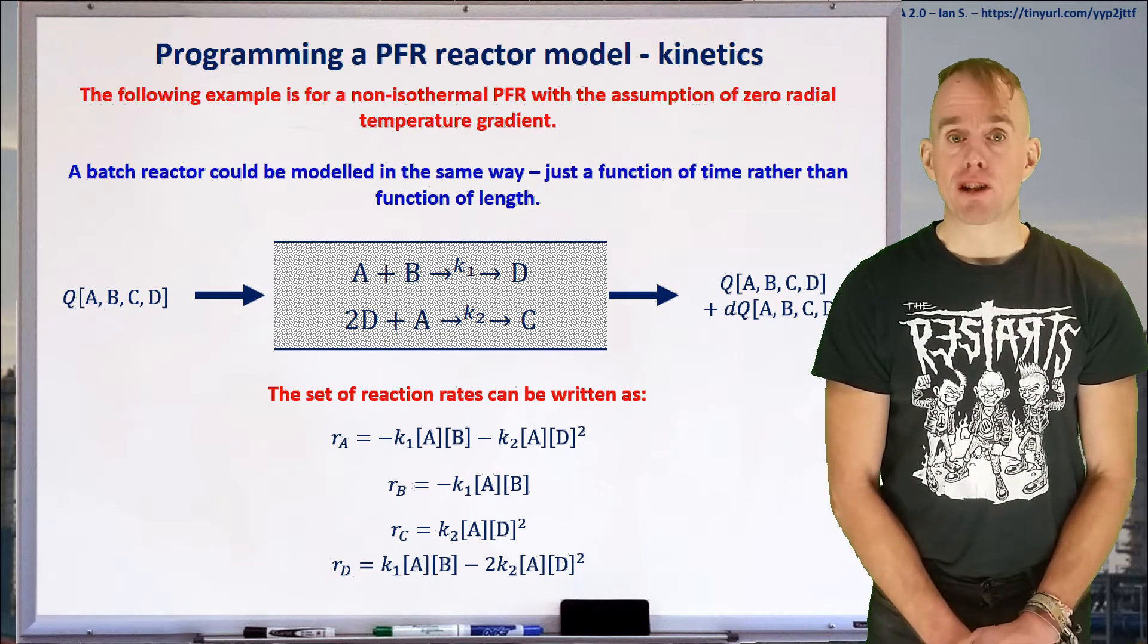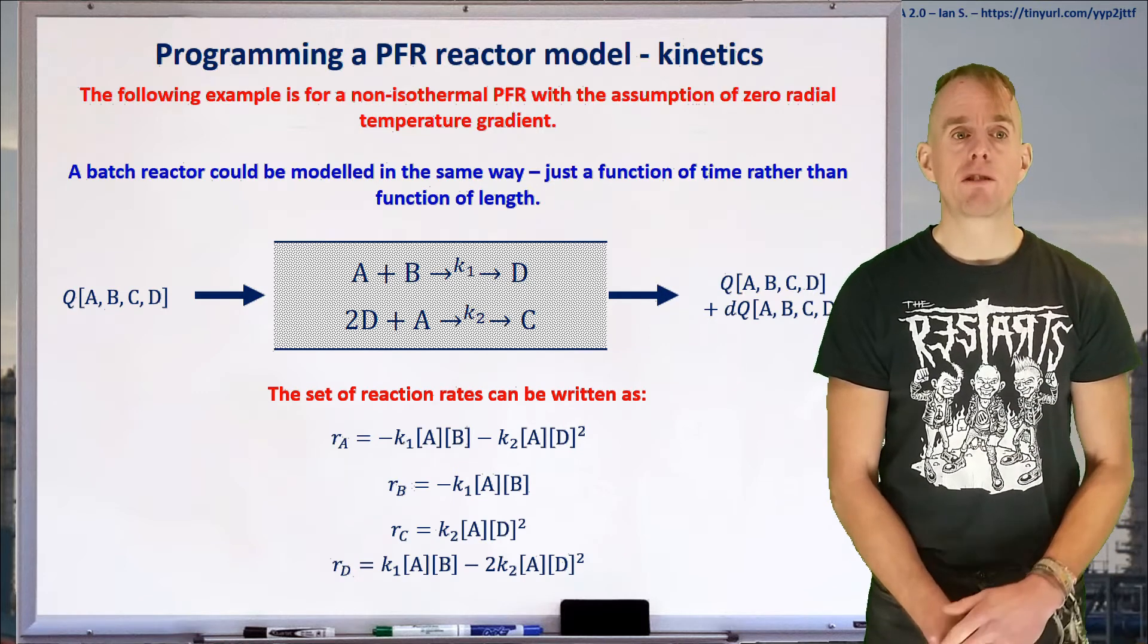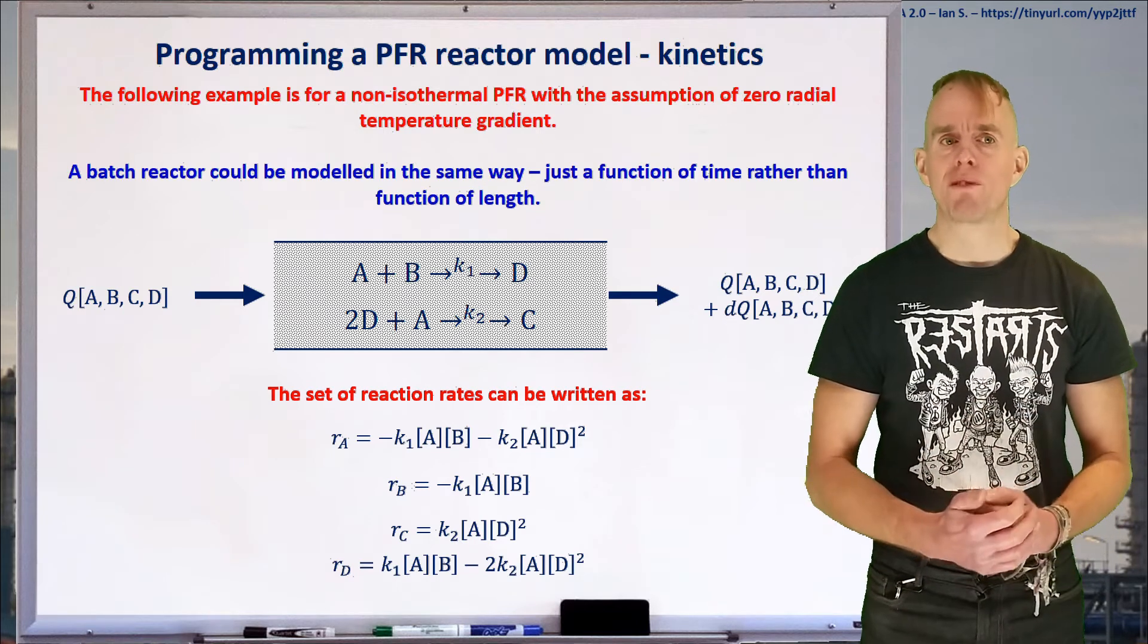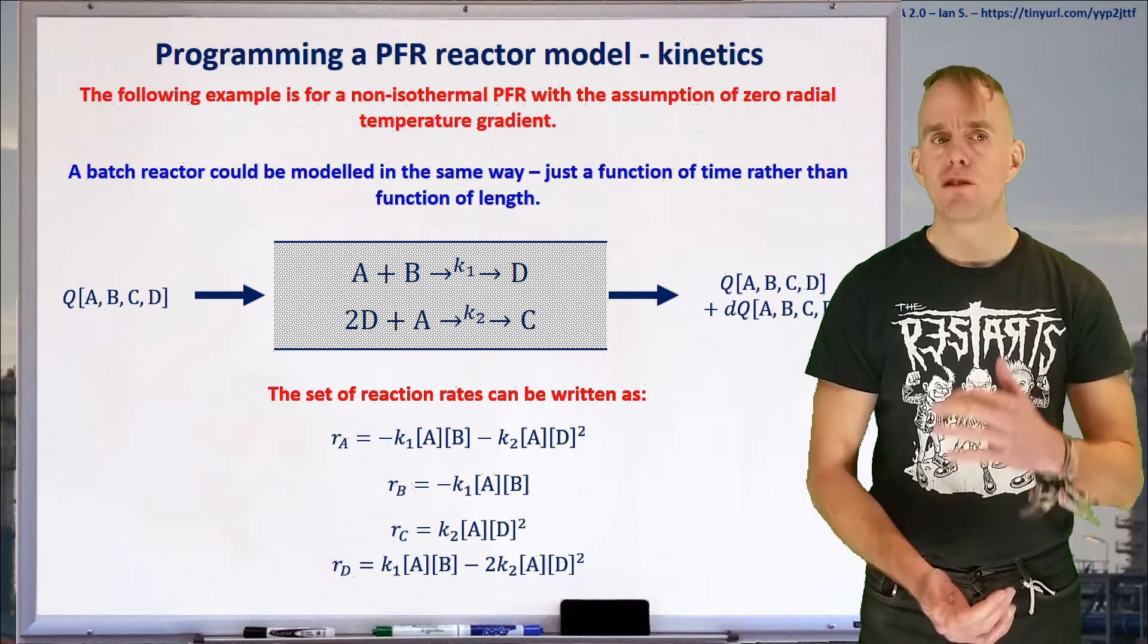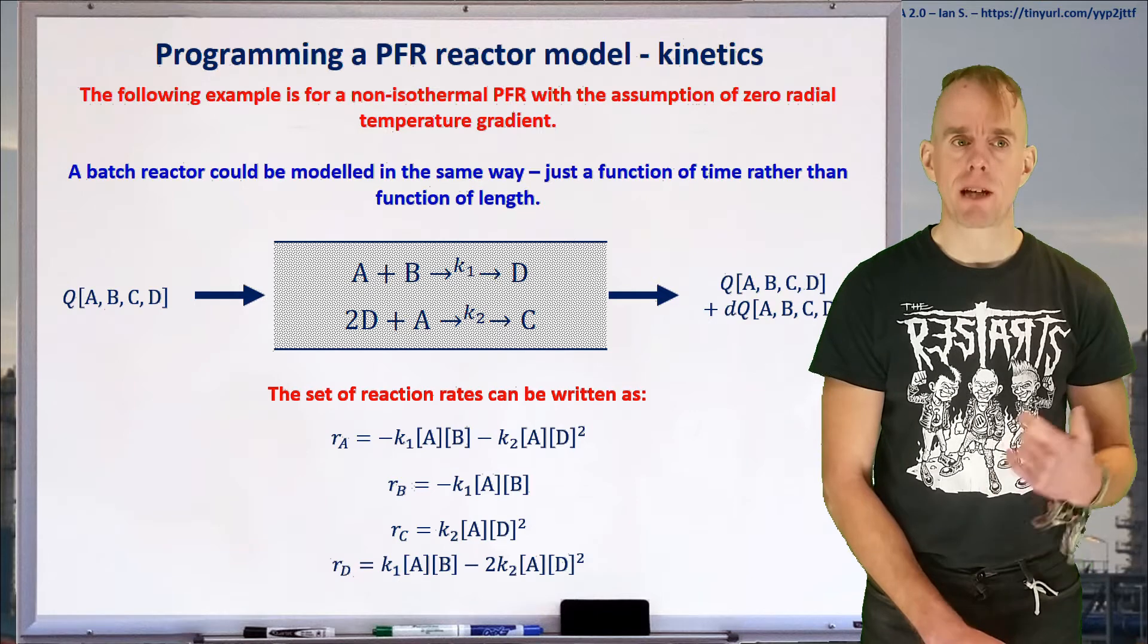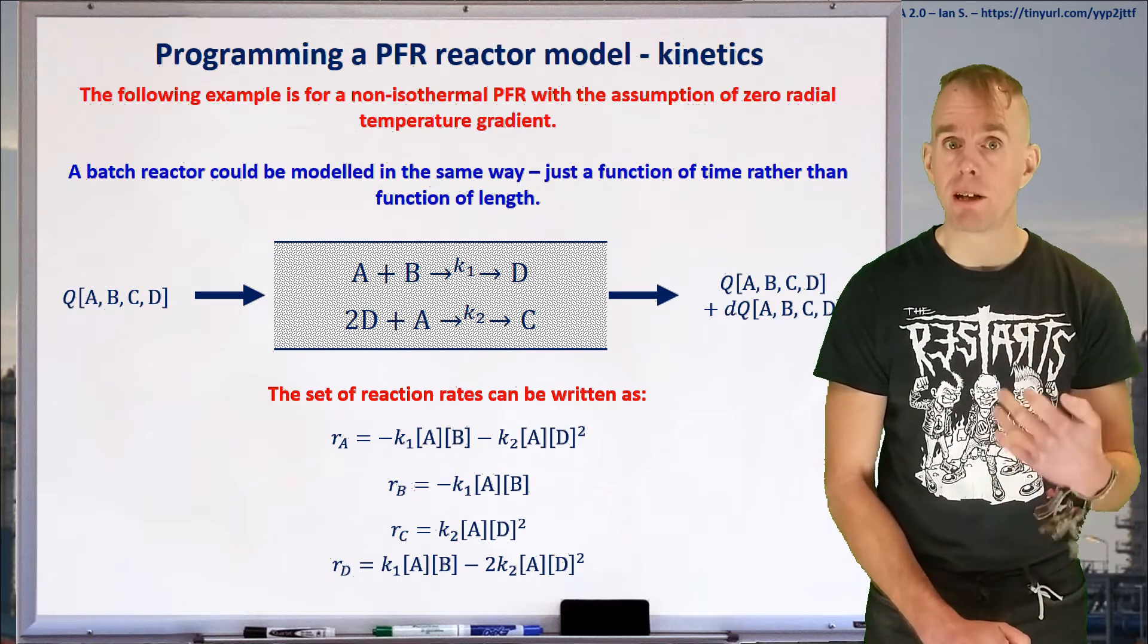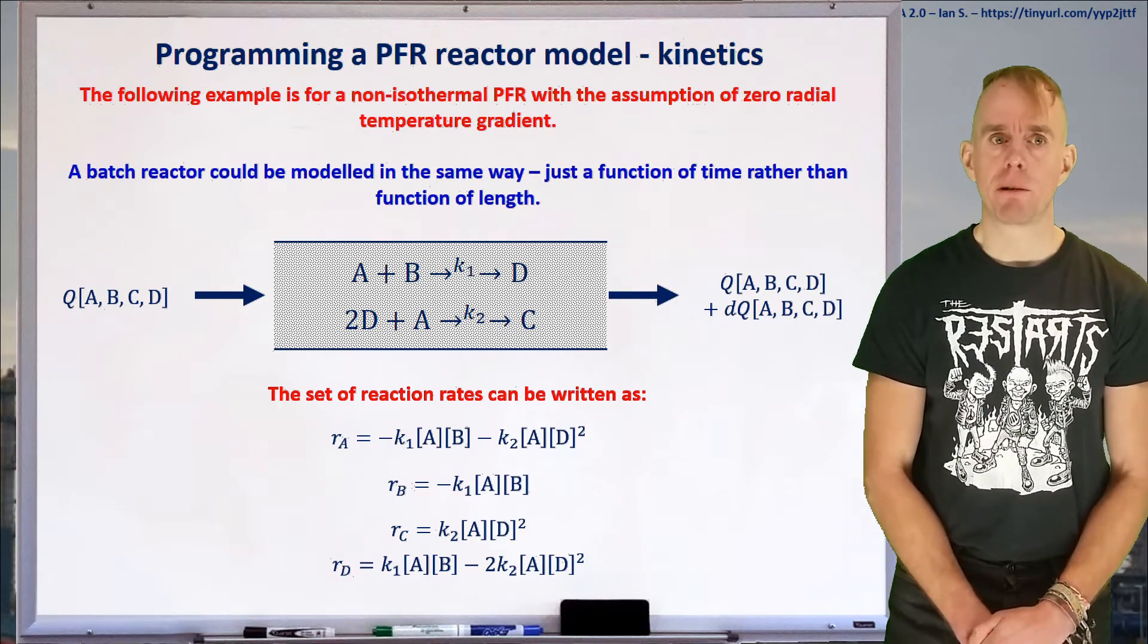Looking at the rate of production of byproduct C, it's only produced in the second equation, so the rate is K2AD². For species D, we have a balance between consumption and production—D is produced in reaction 1 and consumed in reaction 2. So the rate equation is K1AB - 2K2AD², because there's twice as much D being consumed as A.